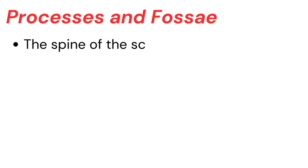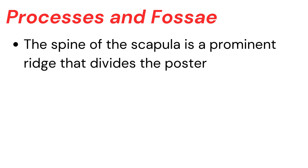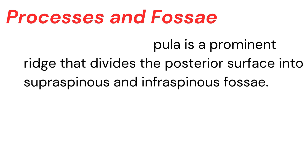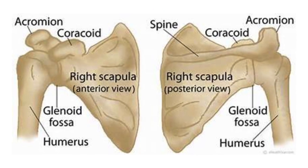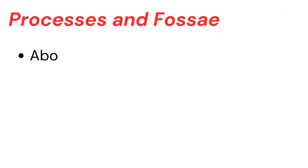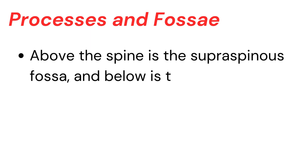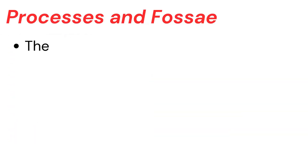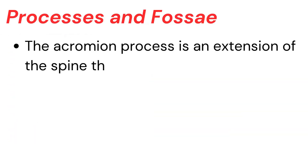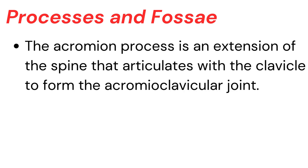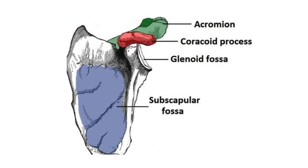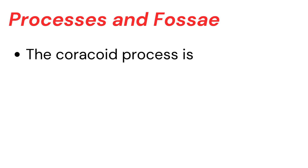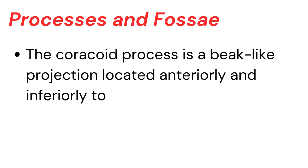Processes and fossae. The spine of the scapula is a prominent ridge that divides the posterior surface into supraspinous and infraspinous fossae. Above the spine is the supraspinous fossa, and below is the infraspinous fossa. The acromion process is an extension of the spine that articulates with the clavicle to form the acromioclavicular joint. The coracoid process is a beak-like projection located anteriorly and inferiorly to the glenoid cavity.